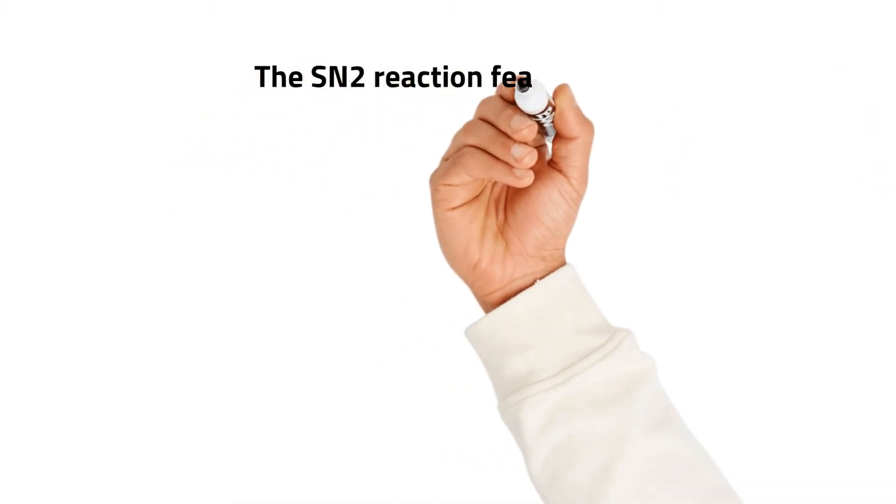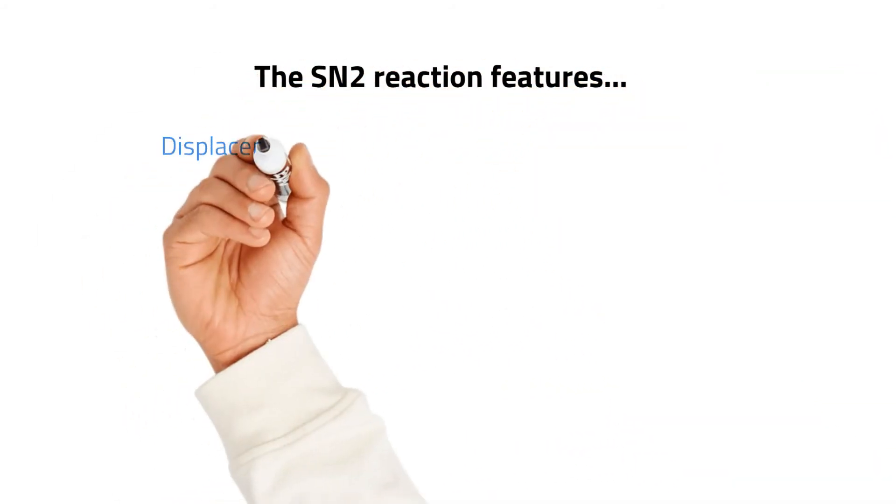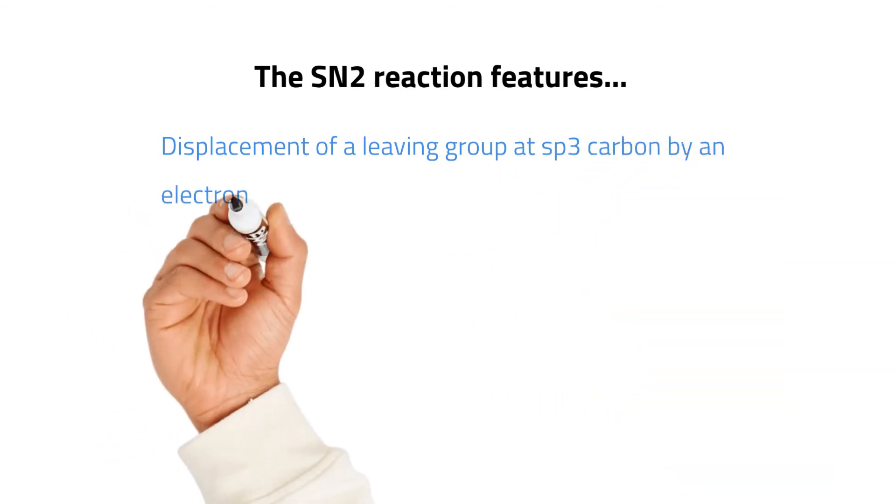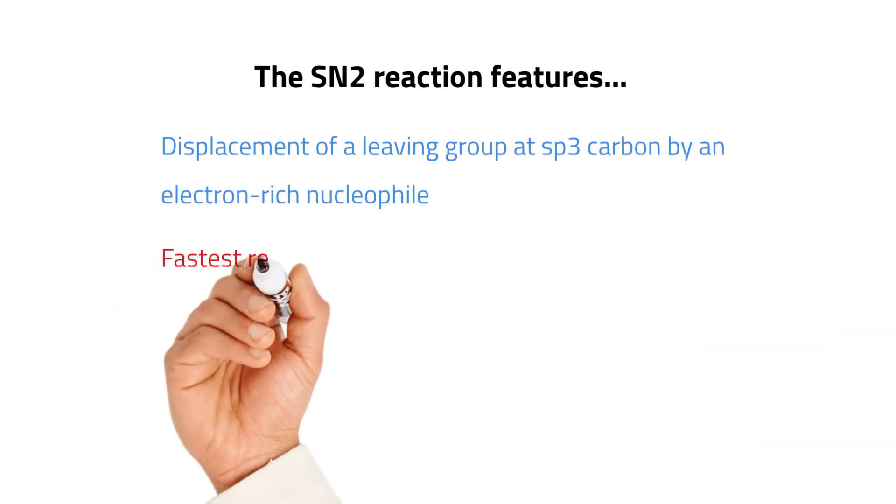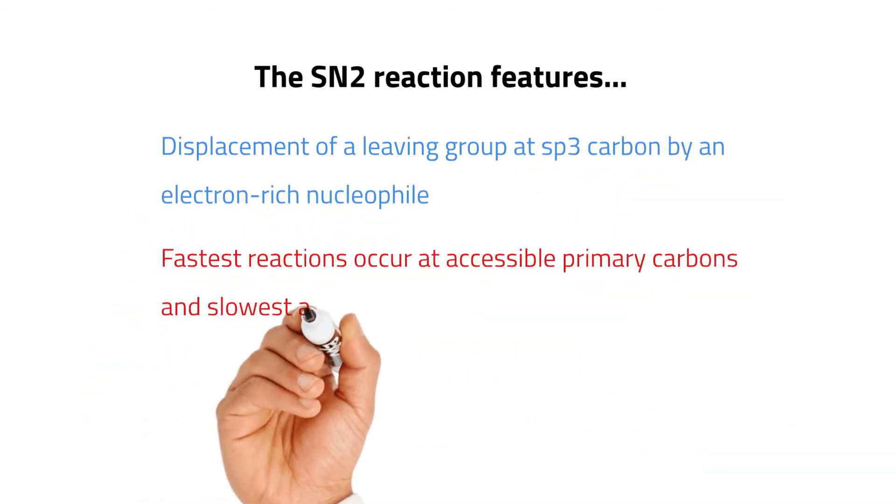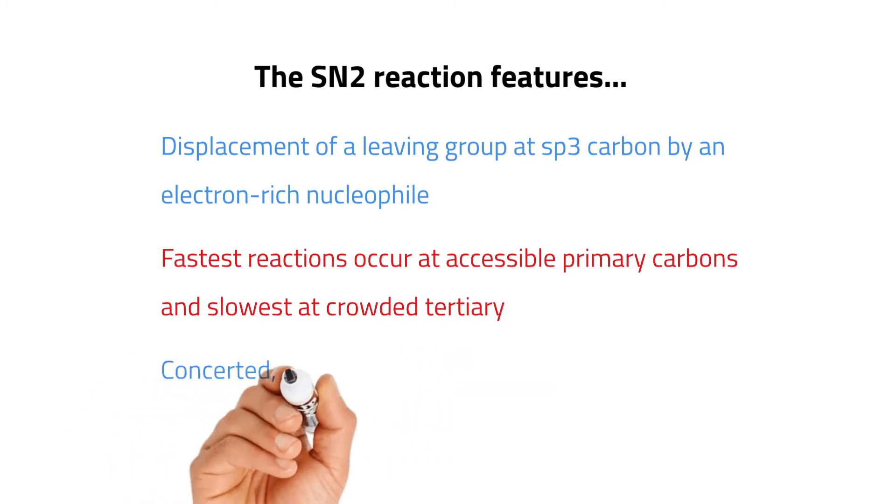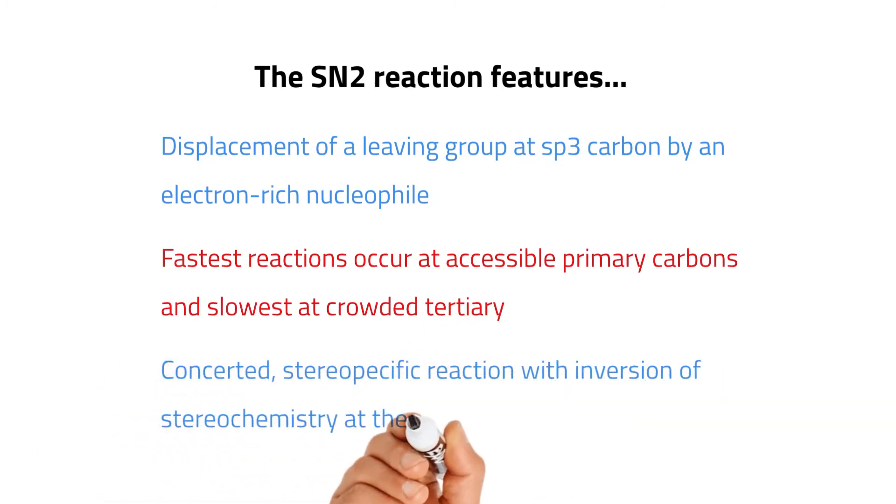Overall, the SN2 reaction occurs with inversion of configuration at the electrophilic carbon because the nucleophile has to attack from the opposite side from which the leaving group is breaking off. The pathway produces only the inverted product, and the SN2 reaction is therefore said to be stereospecific, in which the stereochemistry of the product is dictated by the stereochemistry of the starting material.